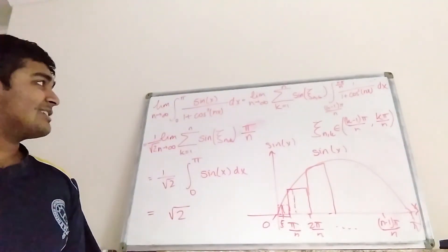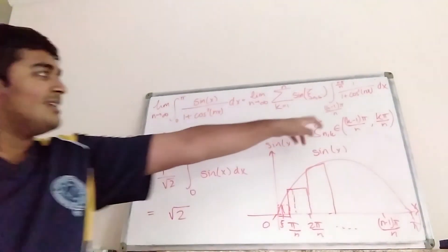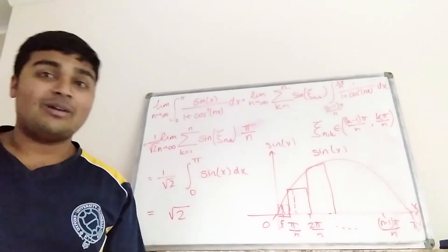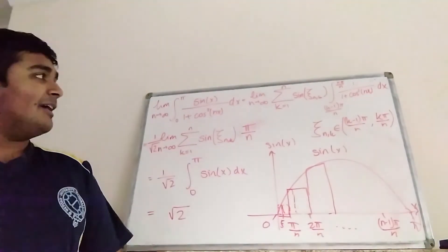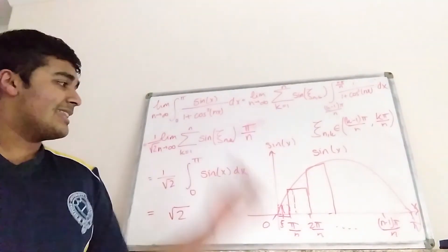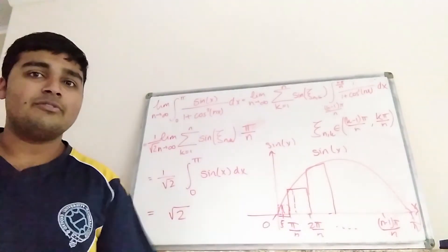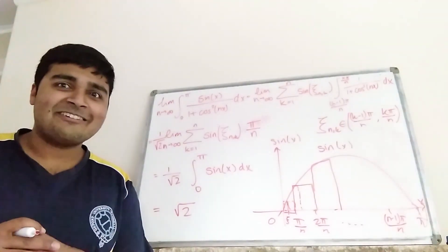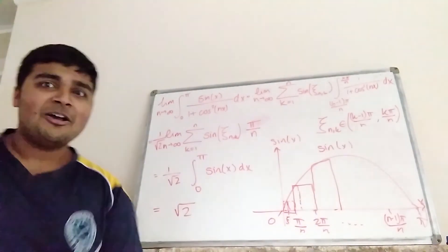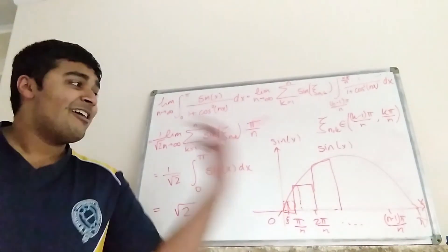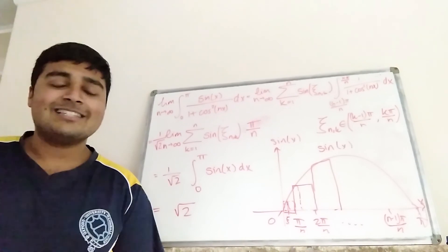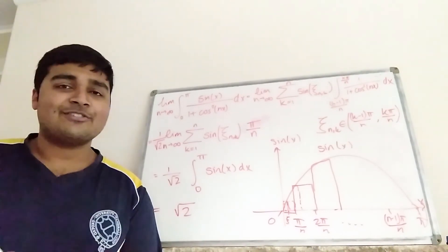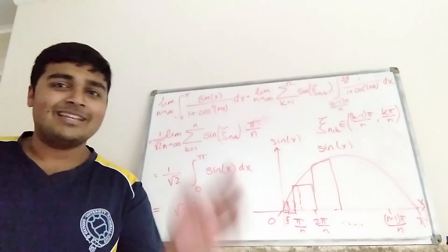We've shown that this limit integral equals √2. The first thing we did was write it as a sum, then we evaluated the inner integral (with most of the brute work shown in a separate video linked below), and then using the definition of the Riemann integral we converted the limit sum to a definite integral — and from there it was straightforward. I hope you enjoyed this video; if you're new here, please consider subscribing and checking out some of my other maths videos. I'll catch you in the next one — have a great day!